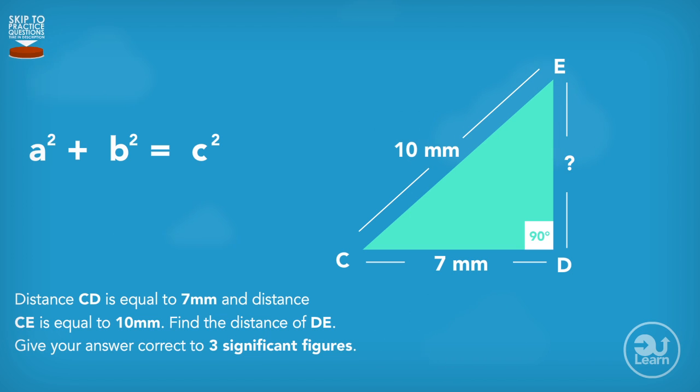Once again, we identify on the right angle triangle the distances we do and don't have in relation to the formula. In this case, the longest side is known, so C is equal to 10mm. Our value for B is equal to 7mm. The A value in this question is the unknown value.